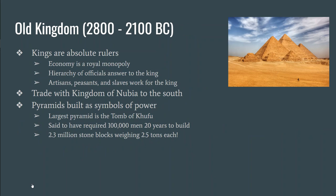Everybody worked for the king — government officials, peasants, slaves, artisans, everyone. They traded with partners a lot; the biggest trading partner was to their south — the kingdom of Nubia, located in modern-day Ethiopia and Sudan. To show you how powerful these kings were, you have to look at the pyramids.